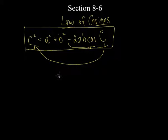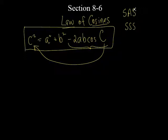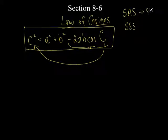There are two situations where you'd use the Law of Cosines. If a triangle gives you a side, an included angle, and a side — that's SAS — that's probably the most common. There's also side-side-side. If I give you two sides and an included angle, you can find the missing side. If I give you all three sides and no angles, you can find any angle.